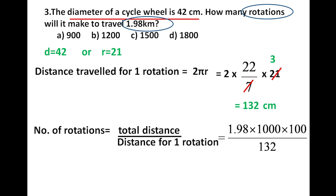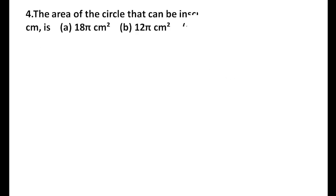We need to convert kilometres to centimetres by multiplying by 1000 × 100. So total distance = 1.98 × 100000 cm. Dividing by 132 (distance for one rotation) and after cancellation we get 1500 rotations. So the third option is correct.